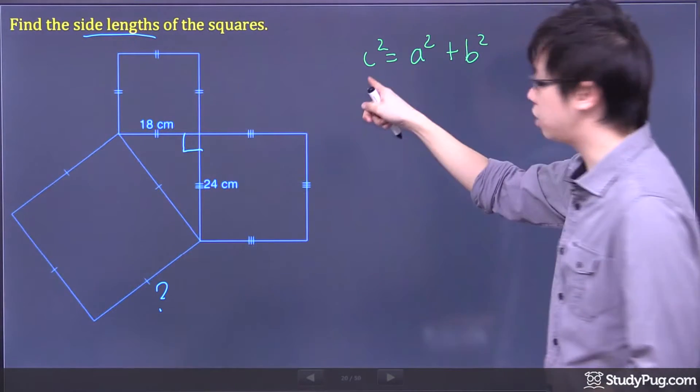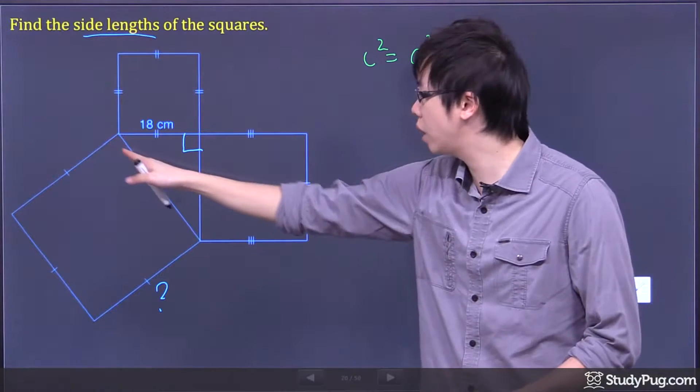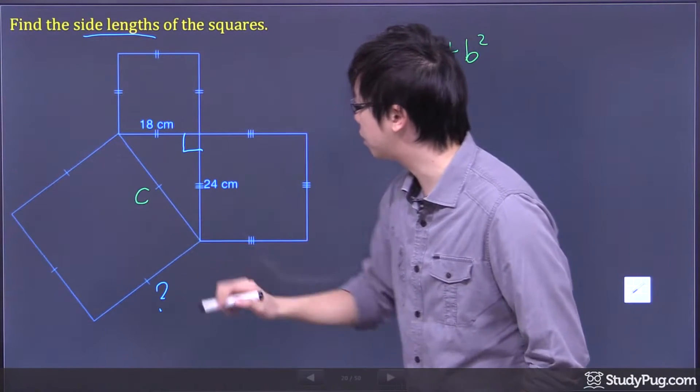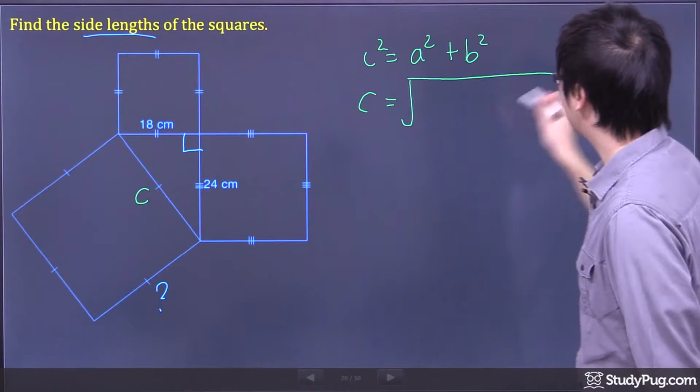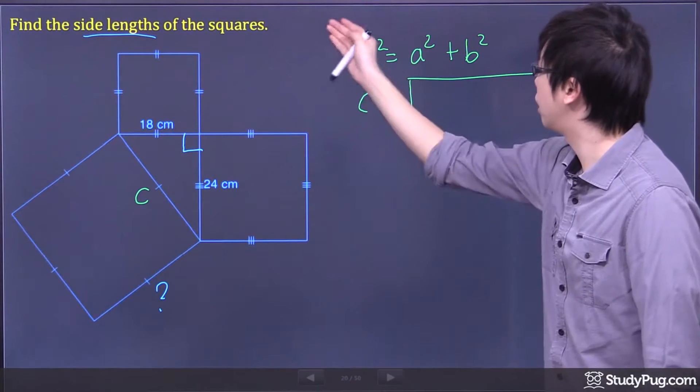So what happens is the c is always the hypotenuse, the longest side of the right triangle. So we're going to call this one c right here. So we don't know what the c is. You're going to square root the whole thing to solve for c. Remember, you have to square root both sides so that you can solve for c.